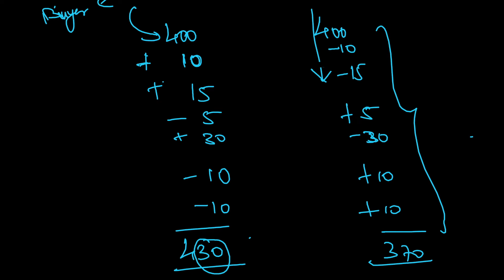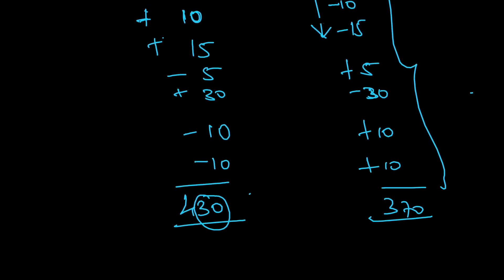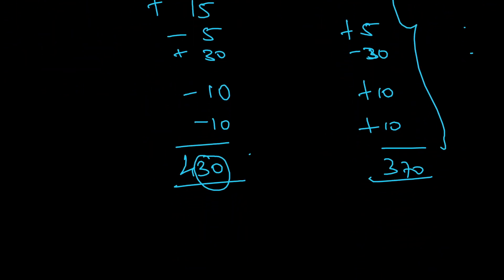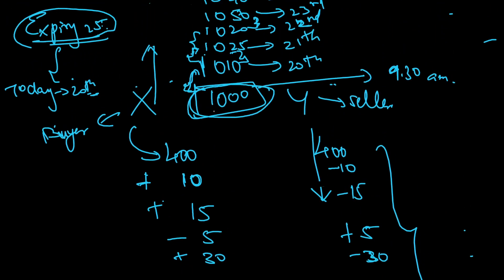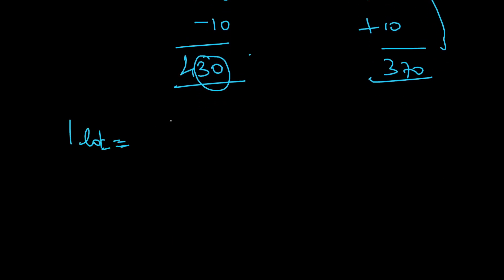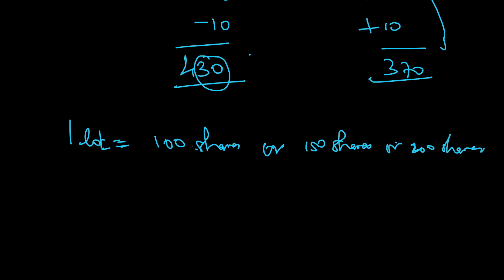This is how daily settlement is calculated through the mark-to-market concept. I have shown this example with just one share, but practically it happens in lots. One lot represents a certain number of shares — it could be 100, 150, or 200 shares depending on the company. There is nothing fixed; it depends from company to company.